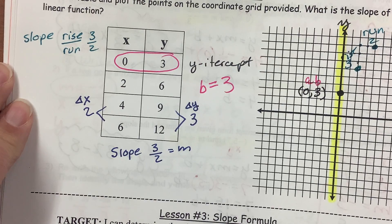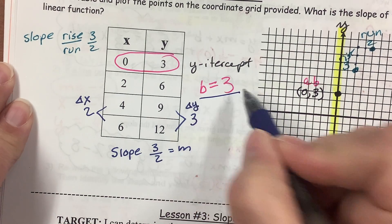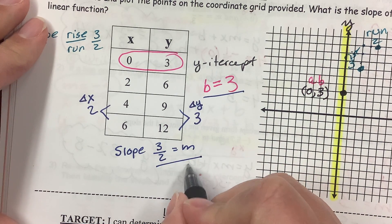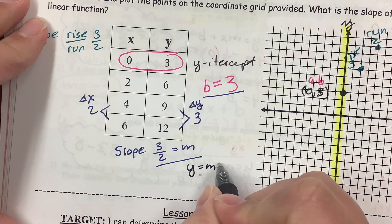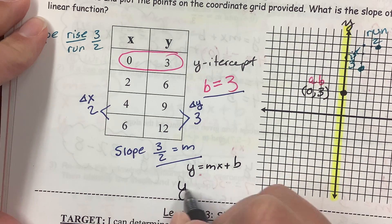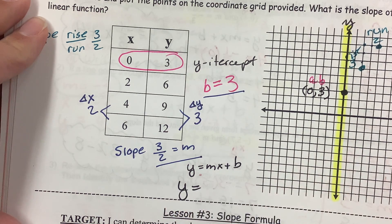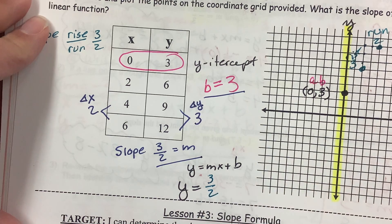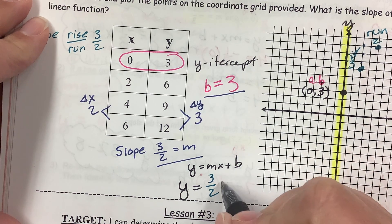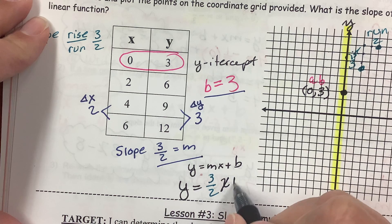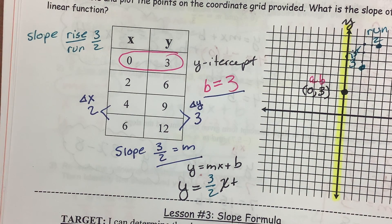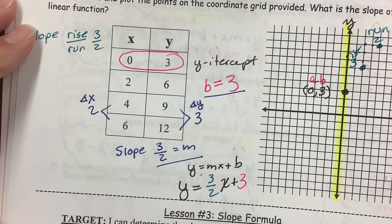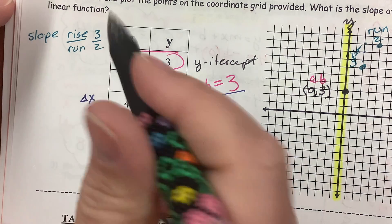So, now I can write an equation. I need the y-intercept and I need the slope. And it's y equals mx plus b. So, y equals, what's m? m is 3 over 2. Don't lose that x. Plus, b is 3. So, there's my equation. What's the slope of the linear function? It's 3 over 2.